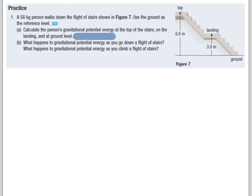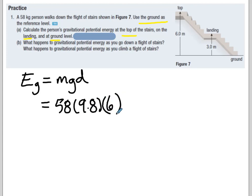So here's a 58 kilogram person walks down a flight of stairs, use the ground as the reference level. So they're telling us where the reference level is, that's really important. Some questions you get to choose it, and if you choose wisely, you can make the problem really easy, or you can make it really difficult. So we're going to calculate the person's gravitational potential energy at the top of the stairs, on the landing, and on the ground level. It's the same expression, just a small little three variables multiplied together, m, g, h, or d. So if we do these 58 times 9.8, if we're at the top of the stairs, this becomes a 6. So we have 58 times 9.8 times 6, and we have 3,410 joules.